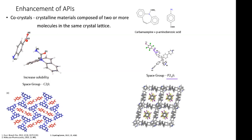Hydrogen bonding is used a lot in drugs that have carboxylic or amine groups because carboxylic acids hydrogen bond strongly with those types of groups. Halogen bonding is like hydrogen bonding, except instead of a hydrogen, you're interacting a halogen — typically iodine — with a nitrogen or sulfur. For example, thyroid hormones are organoiodides, and some thyroid drugs contain sulfur because sulfur interacts with iodine to form a halogen bond. These are two main types of interactions: hydrogen bonding and halogen bonding.